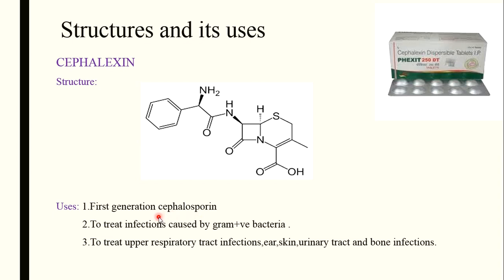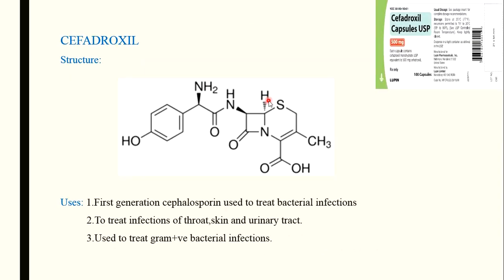Cephalexin is a first generation cephalosporin. As we know, first and second generation cephalosporins are particularly used against gram-positive bacteria; they will not be used for gram-negative bacterial infections. It is used to treat infections caused by gram-positive bacteria, including upper respiratory tract infections, ear infections, skin infections, urinary tract infections, and bone infections.